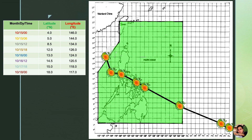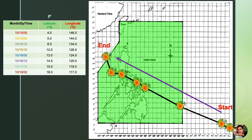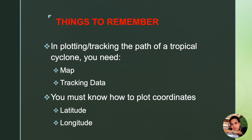So that is how to track the path of a tropical cyclone — be it tropical depression, tropical storm, a typhoon, or a super typhoon — you are able to track it from start to end. Please do try to remember the following points in our lesson. In plotting or tracking the path of a tropical cyclone, you need a map and tracking data. You must also know how to plot coordinates using the latitude and the longitude.